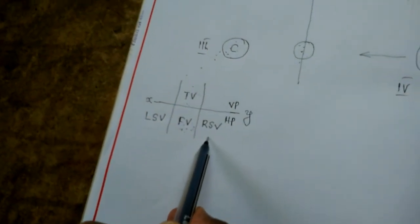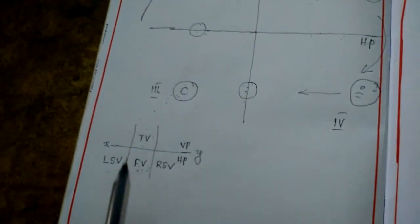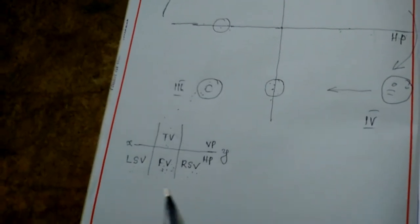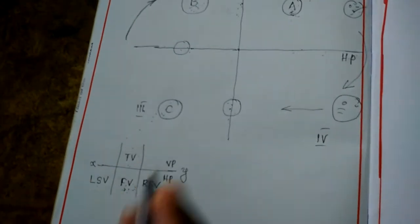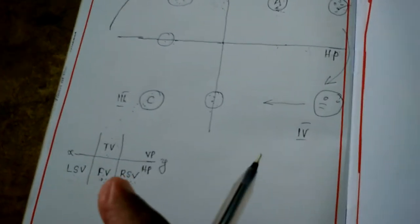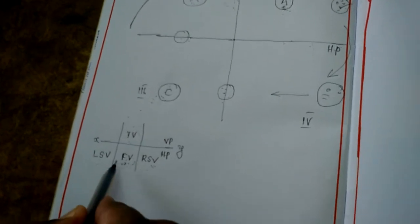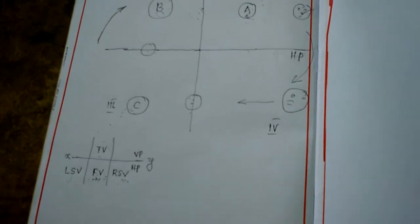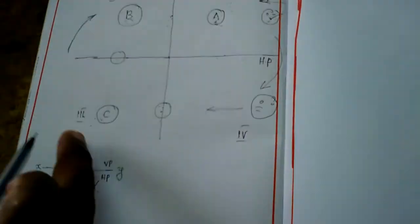In third angle projection method, the left side view is to the left of the front view and the right side view is to the right of the front view. We draw side views beside the front view only because the front view and side view both have the same height. That's why we occupy these positions beside the front view only.